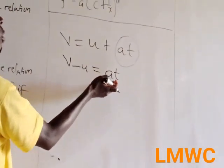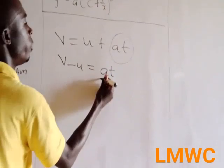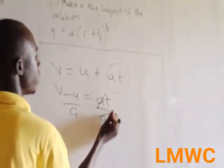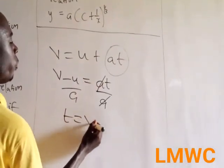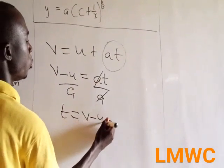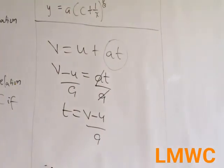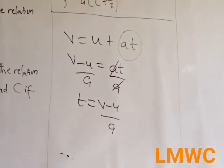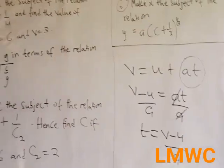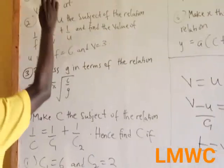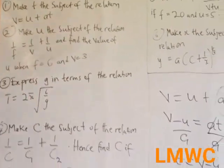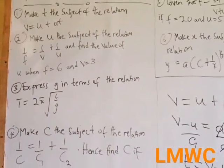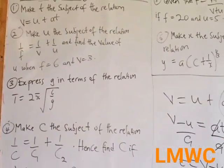We want t but not a, so we divide through by a. So here we can see t is equal to v minus u over a. Either they say make t the subject of the relation, or express t in terms of u, a, and v — they can make the question like that too. That's question 1.